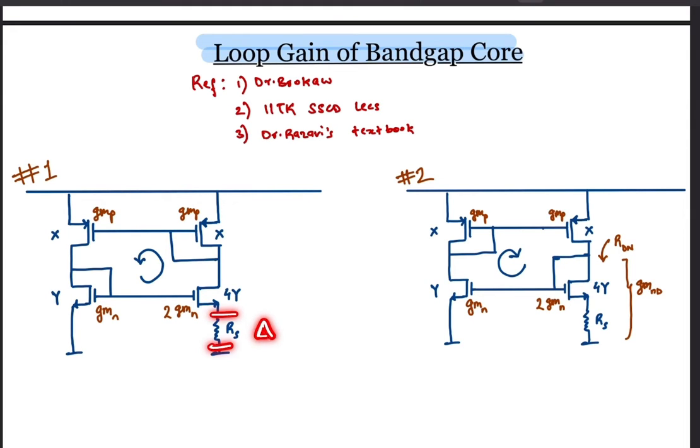Both of the following circuits generate delta VGS, yet circuit 1 is used instead of circuit 2. Let's dive deeper and understand why.